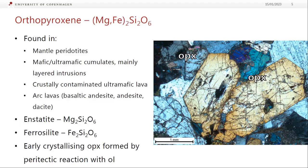Orthopyroxene has two end-members: enstatite, which is the magnesium end-member, and ferrosilite, which is the iron end-member. If we have orthopyroxene crystallizing early in these crustally contaminated magmas, then that's happening by peritectic reaction with olivine, and we'll come back to that in the next part of the lecture.